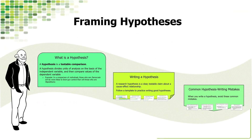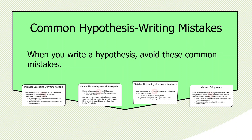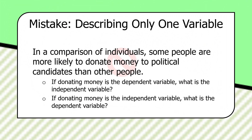Here are some common mistakes in framing hypotheses. The first mistake is describing only one variable. For example: 'In a comparison of individuals, some people are more likely to donate money to political candidates than other people.' That's just observing variation — there's no causal variable. If donating money is the dependent variable, what's the independent? If it's the independent variable, what's the dependent? Statements like this are not hypotheses; they're just citing one variable.